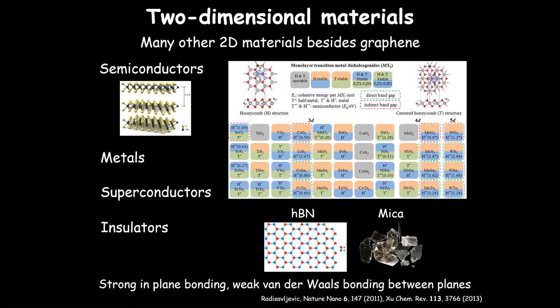An important insulating material I'm going to talk about today is boron nitride. This is a structure which looks very similar to graphene — a hexagonal structure — but instead of carbon atoms, you alternate boron and nitrogen atoms. The broken symmetry of BN instead of carbon-carbon means you open a very large band gap due to the ionic bonding. All of these materials have strong in-plane bonding and weak out-of-plane bonding, so you can exfoliate them down to two-dimensional materials from their bulk three-dimensional form.